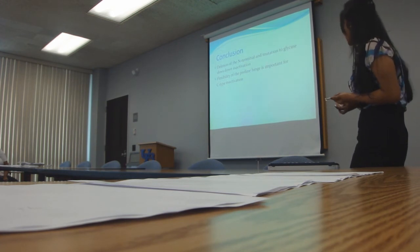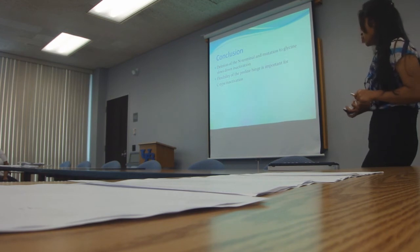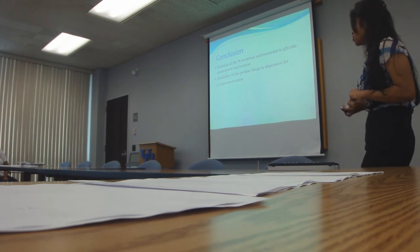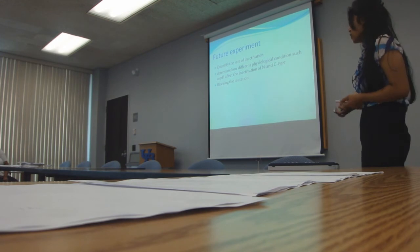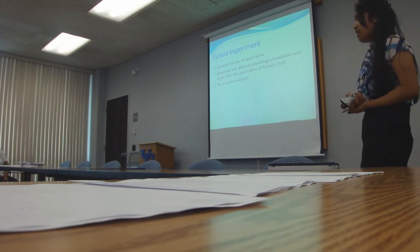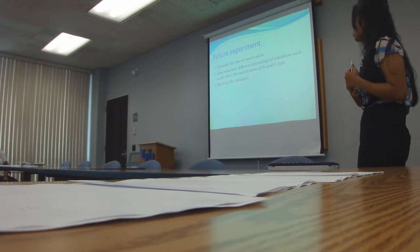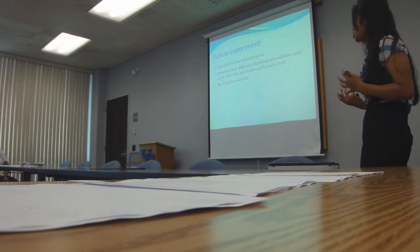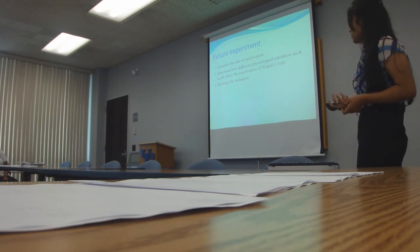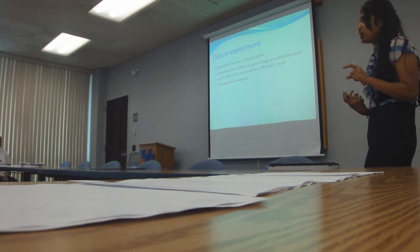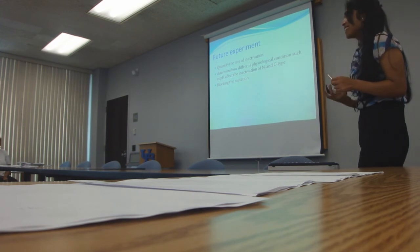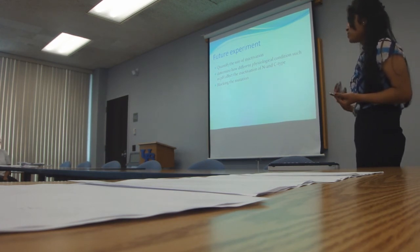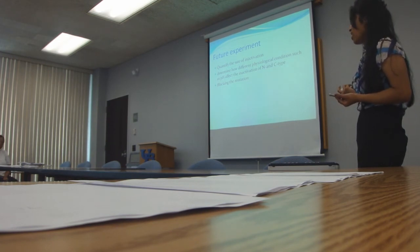From this graph, we have concluded that deletion of the N-terminal and mutation to glycine slows down inactivation, and flexibility of the proline hinge is important for the C-type inactivation. I will be continuing with this study, and my next step would be to quantify the graphs and find a constant rate of inactivation, and to determine the effect different physiological conditions such as pH have on the N-type and C-type inactivation. My final step would be to find a blocker to block the mutation and prevent inhibition of C-type inactivation, which would allow us to possibly prevent cardiac arrhythmia, which is usually caused after heart failure.